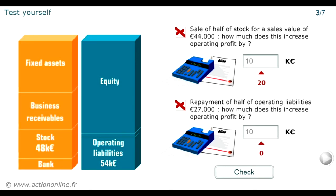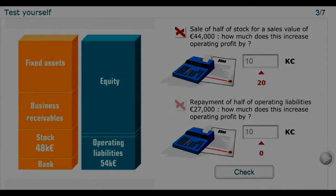Bacall repays half of its operating liabilities, amounting to €25,000. How much does profit increase by? There is no impact on profit at the time a liability is repaid. There is no consumption and no income — just the removal of a source of finance, the liability, by an equal use of funds, the bank. Do not confuse liabilities with an expense for the year.